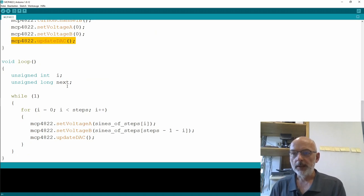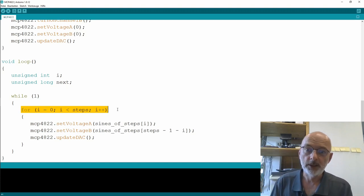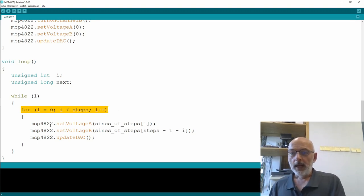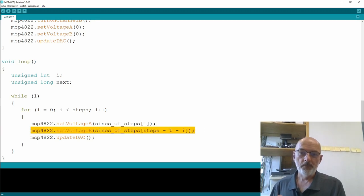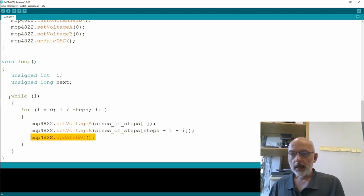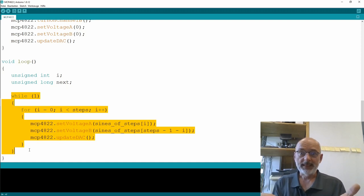There's not much happening in the loop. I have an I variable which I use to go in a for loop through my 512 pre-calculated steps. And I set voltage A to step I and voltage B to steps minus 1 minus I. So I come from the other end of the array with my values. And then I update my DAC and I do that forever. That's it.